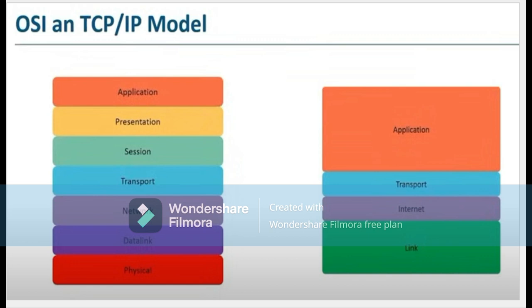The Application layer refers to the applications you use to carry out activities — Excel sheets with company data, Microsoft Office, CRM systems, payroll, and user accounts. The Presentation layer is how the network presents your document or data that you are sending. The Session layer is where a transaction is initiated. The Transport layer is the means of transmission. The Network layer handles establishment, and the Data Link layer transfers packets to or from the Physical layer.